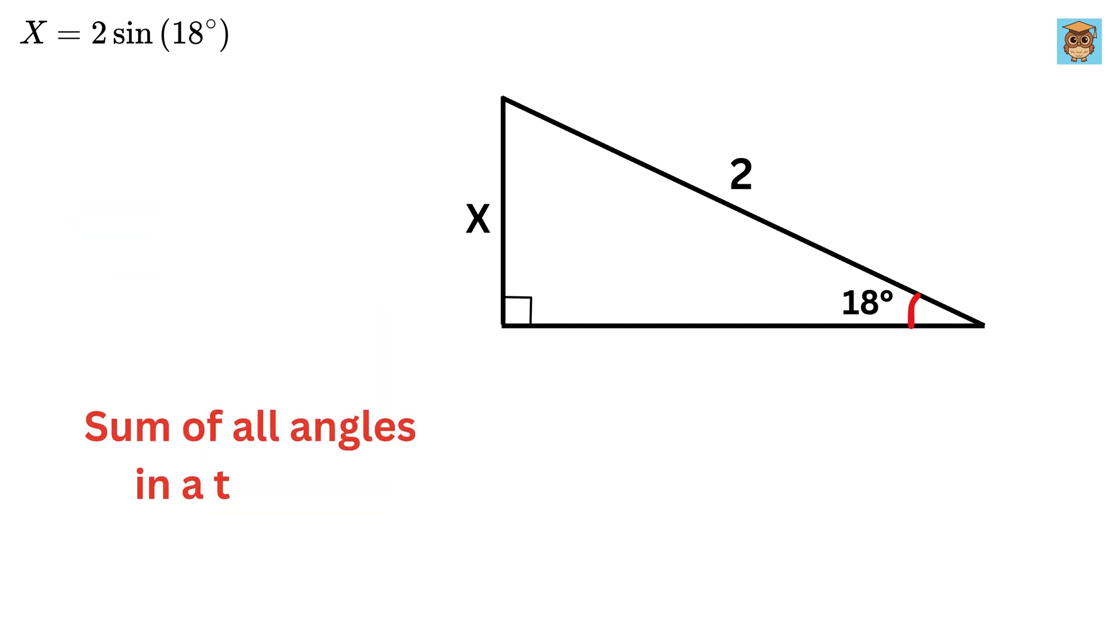Sum of all angles in a triangle equals 180 degrees. Since this is 90 degrees, therefore this angle will be equal to 180 minus 90 minus 18, or 72 degrees. Right. Now we will construct a triangle which will be congruent to this triangle like this.